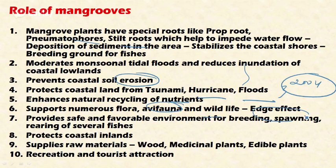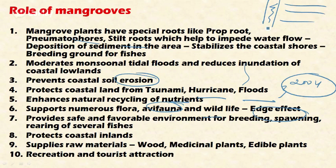Mangroves also enhance nutrient cycling and support numerous flora, avifauna — which are bird species — and wildlife. Mangroves are an ecotone, which is the region between two different ecosystems — the aquatic ecosystem and the terrestrial ecosystem. This ecotone supports various flora and fauna. Mangroves provide a safe and favorable environment for breeding, spawning, and rearing of several fishes. They protect coastal inlands and also provide raw materials such as wood, medicinal plants, and edible plants for communities living in coastal areas, and serve as a recreation and tourist attraction.